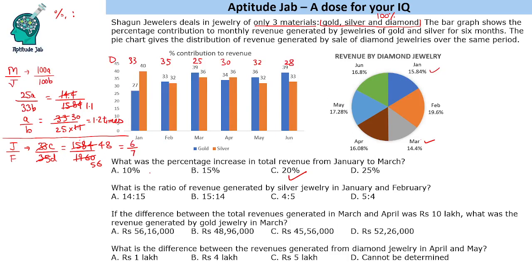Now we need the ratio of silver jewellery revenue. Silver in January is 40% and in February is 32%. So: 6×40 upon 7×32 = 240/224. Simplifying, that is 15 by 14. So the answer is 15 ratio 14.